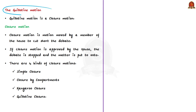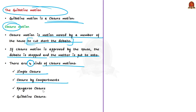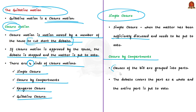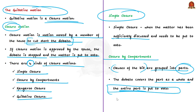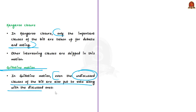The Guillotine Motion is a closure motion — a motion moved by a member of the house to cut short the debate; if approved, the debate is stopped and the matter is put to vote. There are four kinds of closure motions: simple closure, closure by compartments, Kangaroo closure, and Guillotine closure. In simple closure, a member moves when the matter has been sufficiently discussed and needs to be put to vote. In closure by compartments, clauses are grouped into parts and each part is debated and voted as a whole. In Kangaroo closure, only the important clauses are taken up for debate and voting, with other intervening clauses skipped. In Guillotine Motion, even the undiscussed clauses of the bill are put to vote along with the discussed ones, done because the time allotted for discussion is over.